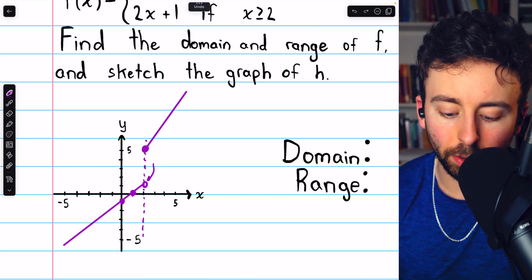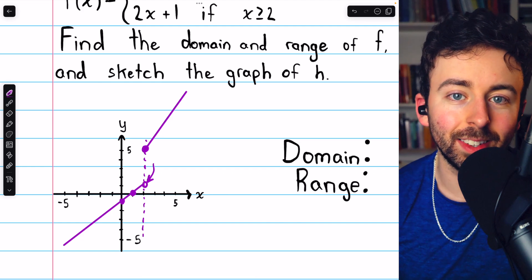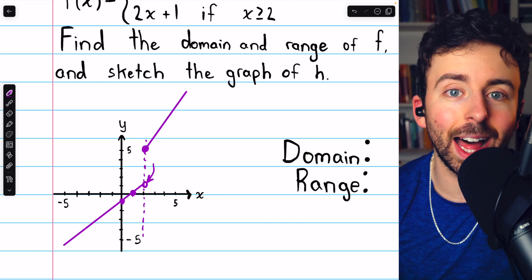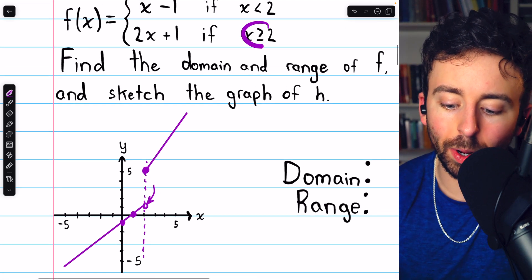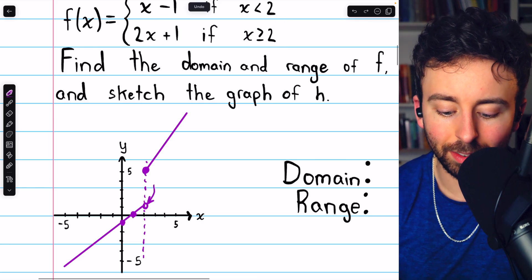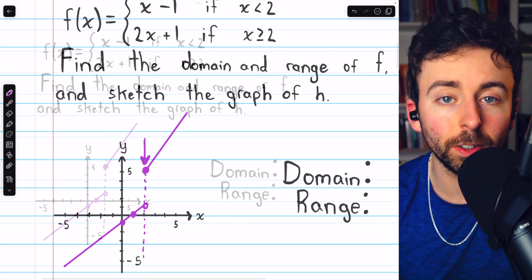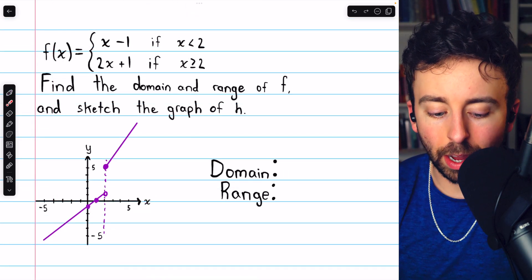So this line has an open circle at x equals 2 because this line doesn't actually apply at x equals 2. When x equals 2, this line applies. So this line has a filled in circle. That's how to sketch a simple piecewise function.